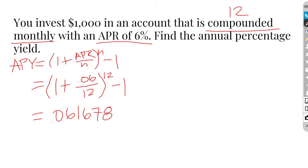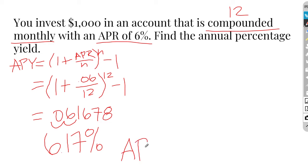That value is a little bit rounded. Converting that back to a percentage, we find that the actual interest rate is 6.17%, a little bit higher than our original APR. That's something to always note: our APR is always going to be less than or equal to our APY.